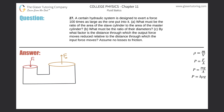Number 27: a certain hydraulic system is designed to exert a force 100 times as large as the one put into it. Part (a): what must be the ratio of the area of the slave cylinder to the area of the master cylinder? Let me clarify some terms — the master cylinder is the input cylinder, and the slave cylinder is the output cylinder.